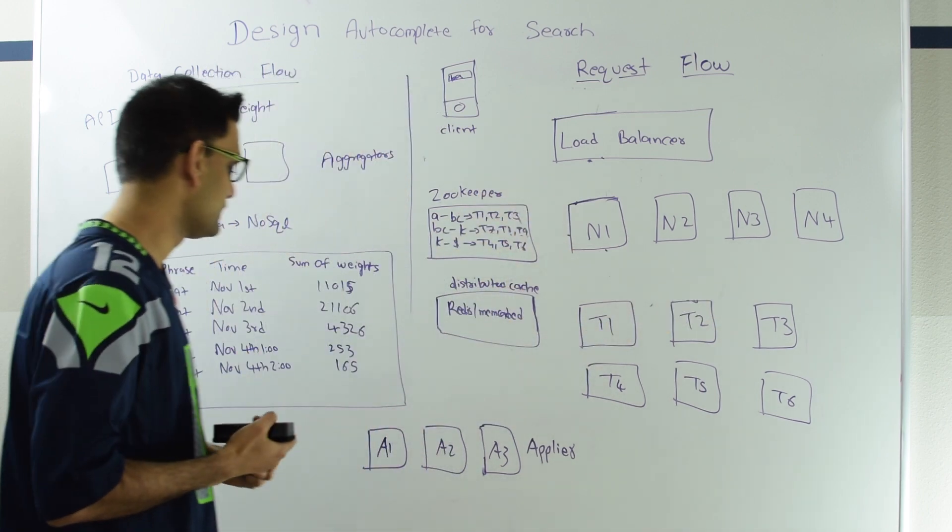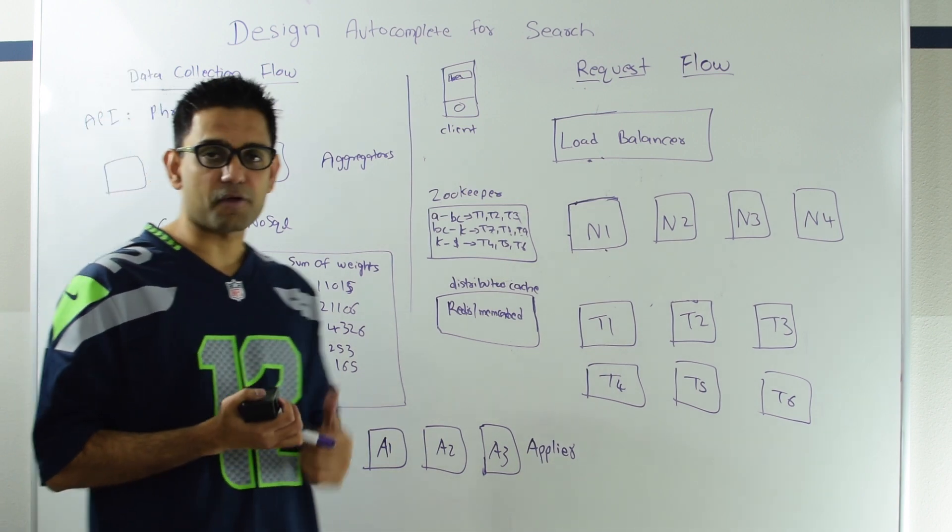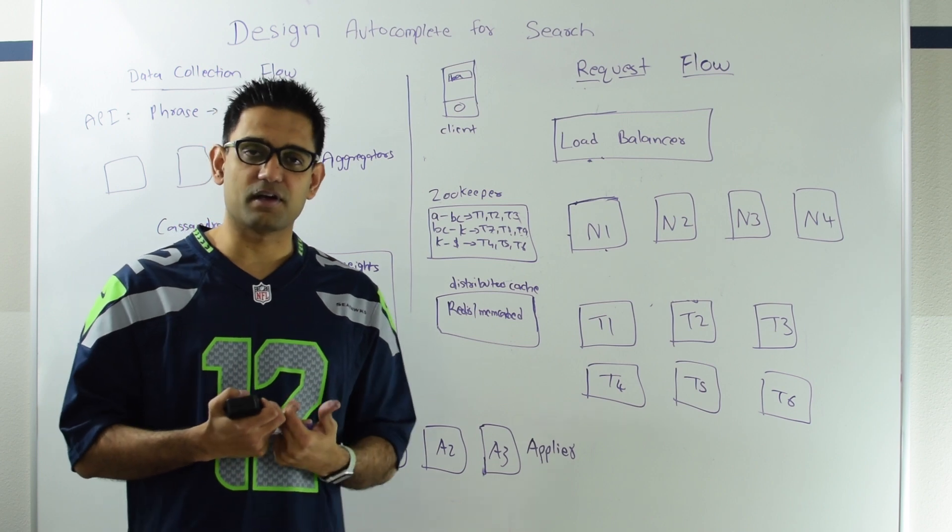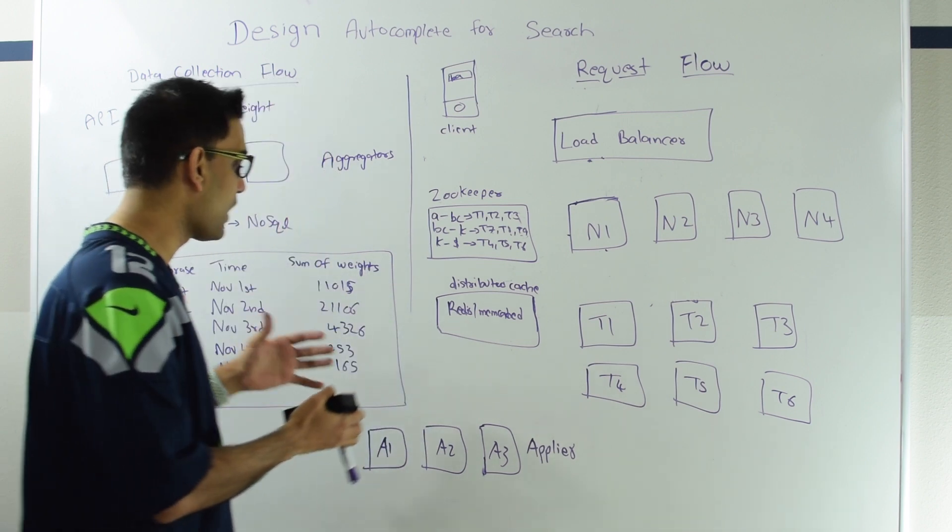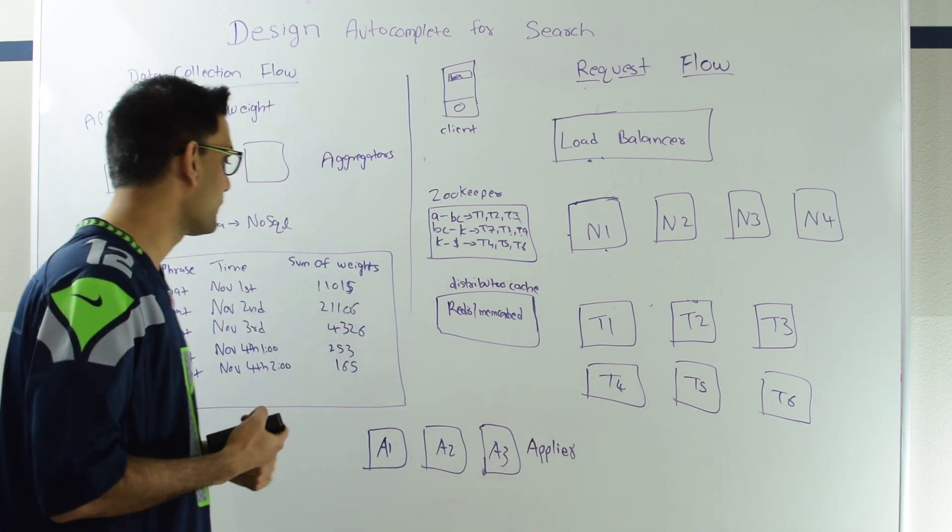So every new request after that time will see that new data. So that is a very simple applier. I'm sure a lot of experimentation would be done. I won't be shocked if there is some machine learning also involved in deciding how to create this trie, but all that is outside the scope of this problem.